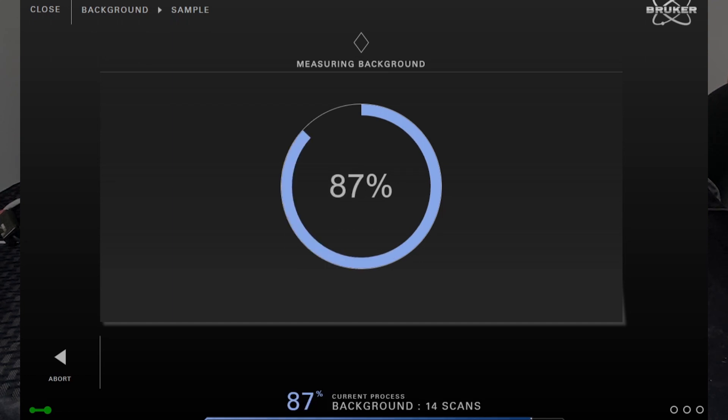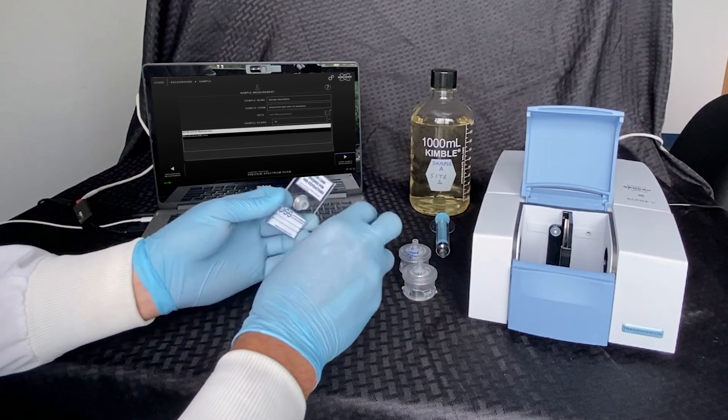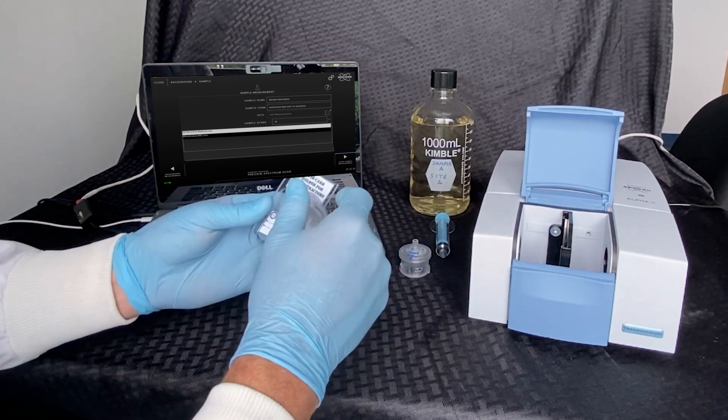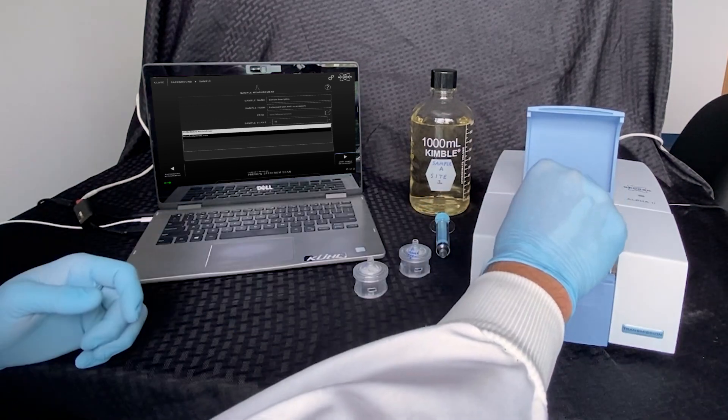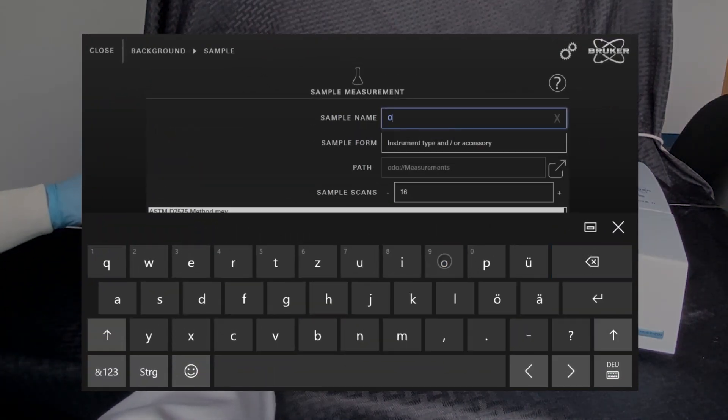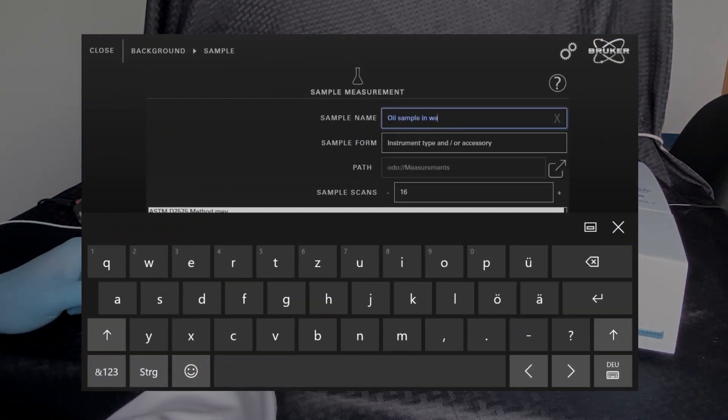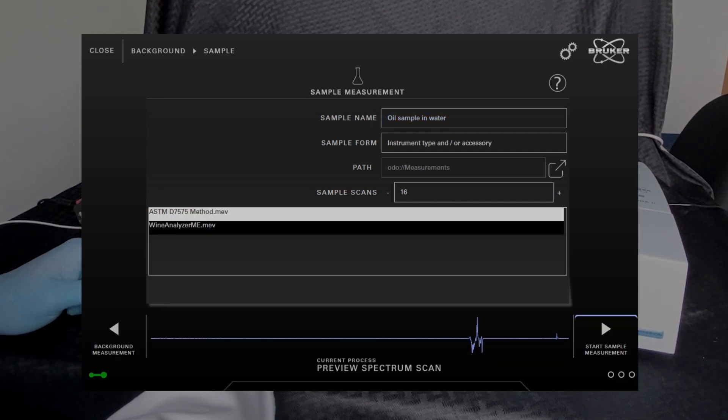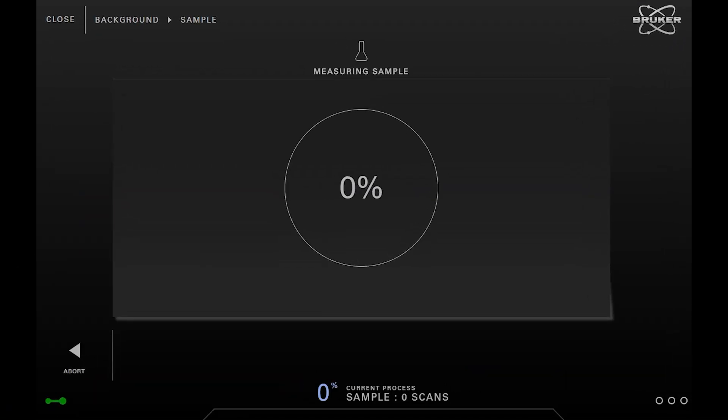After that we continue with the actual sample. We replace the blank extractor with a loaded one, name our sample, select the right multi-evaluation method, and start the sample measurement with one click.